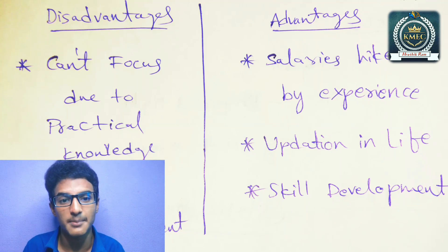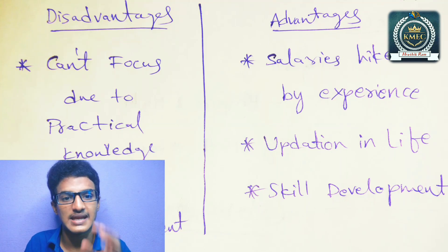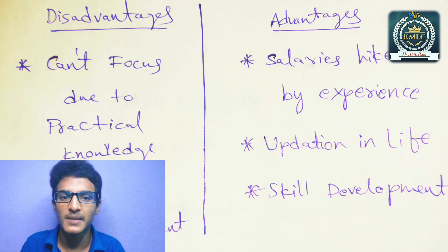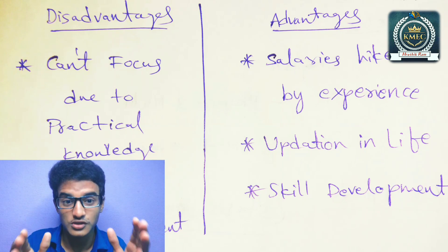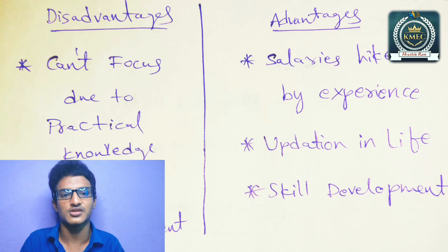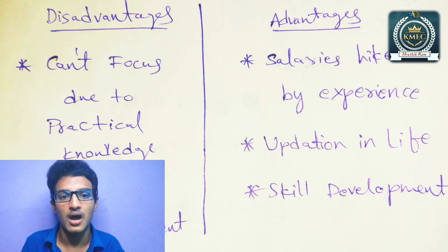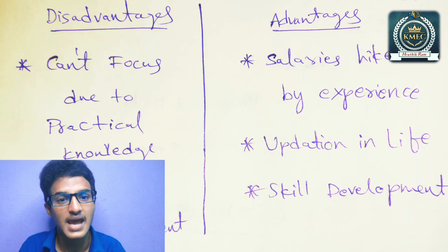Civil engineers work on dams and hydroelectricity projects as a major part of their role. Moksha Vishwesh Raya is considered the best engineer of India, and his birthday is celebrated as Engineers Day.